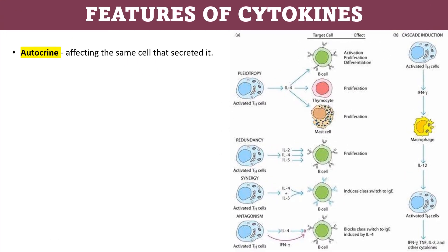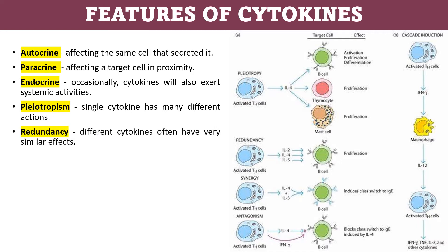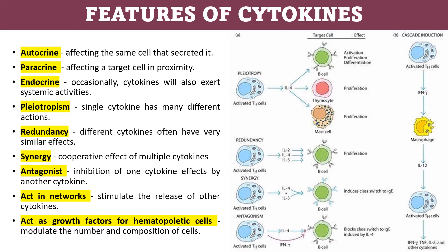Autocrine refers to cytokines affecting the same cell that secretes them. Paracrine is when cytokines affect a target cell in proximity. Endocrine: occasionally a cytokine will also exert systemic activity. Pleotropism is when a single cytokine has many different actions. Redundancy: different cytokines often have the same or similar effect. Synergy is the cooperative effect of multiple cytokines. Antagonism is the inhibition of one cytokine's effects by another cytokine. Cytokines act in networks — they stimulate the release of other cytokines, act as growth factors for hematopoietic cells, and modulate the number and composition of cells.